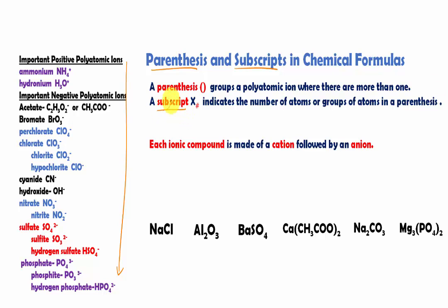Then we have subscript. Think of the prefix 'sub' — like subway, which goes under. A subscript is a number written below the element symbol. It indicates the number of atoms or groups of atoms in a parenthesis. Remember, that group of atoms is your polyatomic ions.